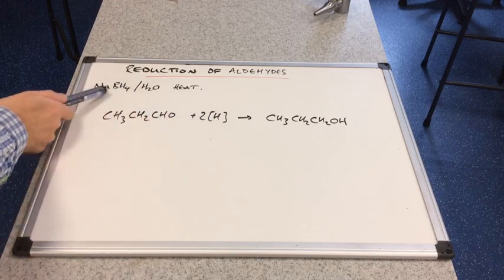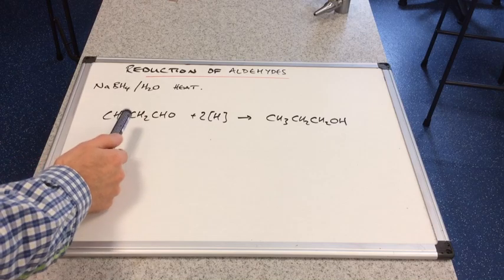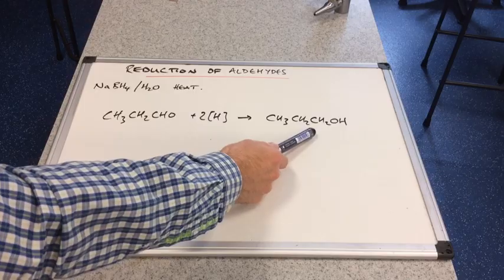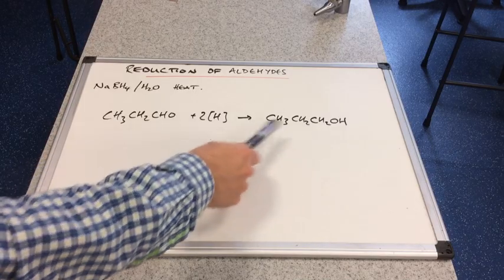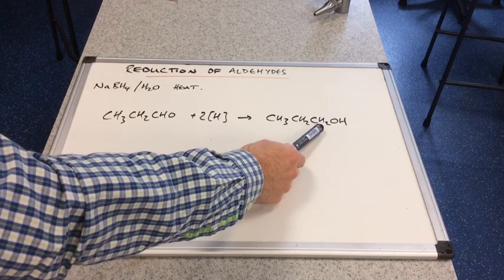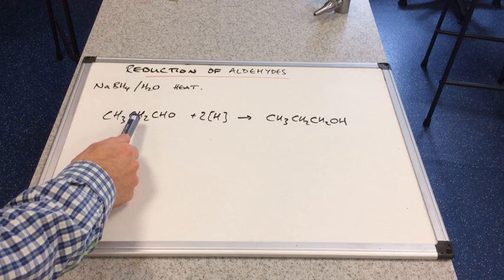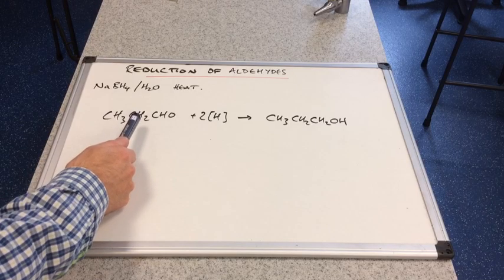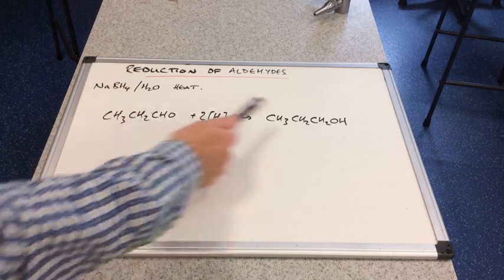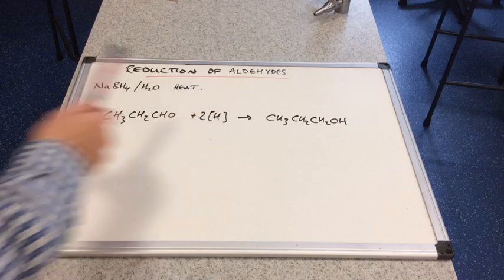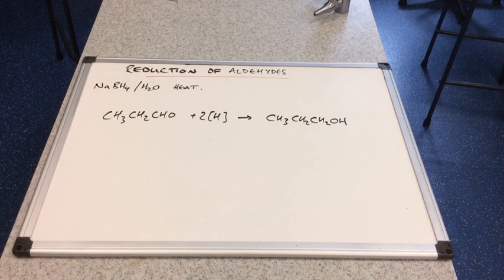So there's the example I'm using for this. I'm going to reduce propanal. Remember, that is this. And you can see from the equation, what is propanal reduced to? Well, it's reduced back to the primary alcohol. So you think about it the other way around. When you oxidize this, you make that. Reduction is the opposite of oxidation. And so if you reduce the aldehyde, you're going to make the corresponding primary alcohol.